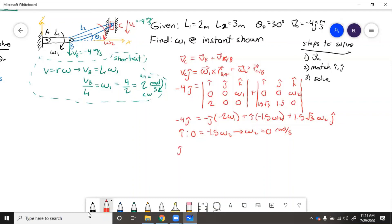And then in the j, negative 4 equals 2 omega 1 plus 1.5 square root 3 omega 2, but we know omega 2 is 0 because we just figured that out. So then we get negative 2 equals omega 1, but we know that it is going clockwise. So omega 1 equals 2 radians per second clockwise. So this answer matches our reality check. I'll see you next time.